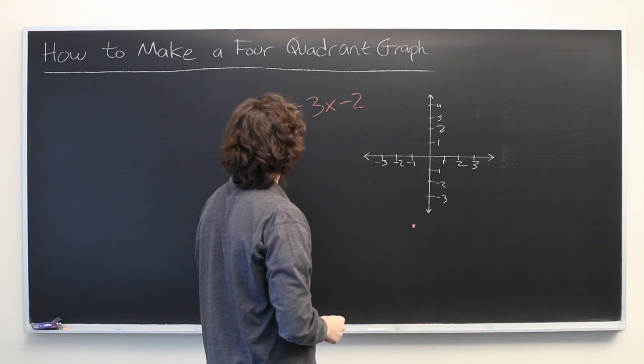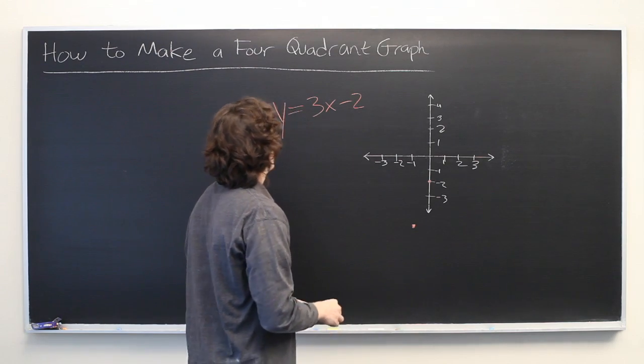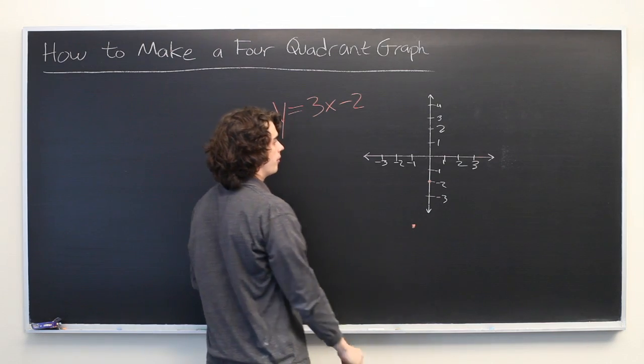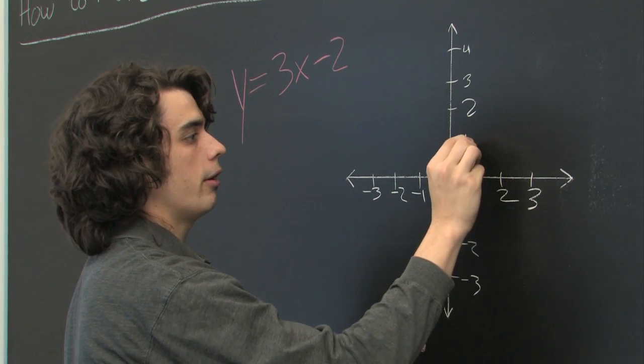All right, what about if we give input value of one? So x is one, we get three times one is three, minus two is one. Let's go over to one, up one.